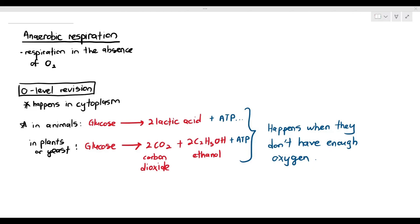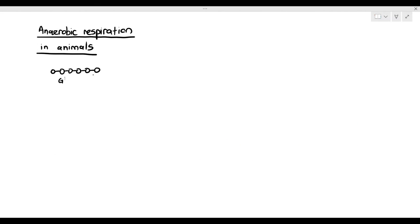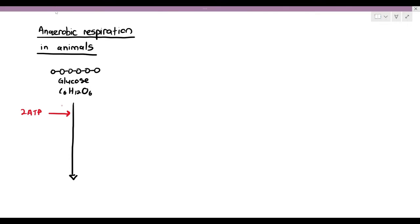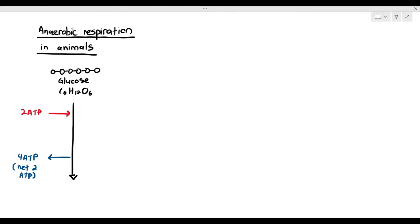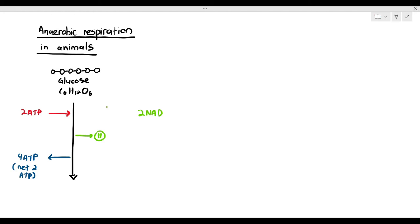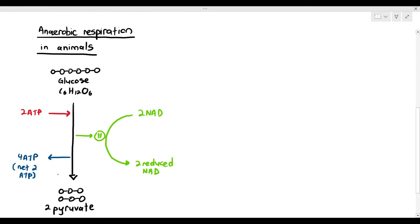We are going to see the process of anaerobic respiration in animals. We always start off with the glucose molecule first, and it will undergo a process known as glycolysis. In glycolysis, you have to spend two ATP molecules to make the glucose more reactive, and it becomes fructose-1,6-bisphosphate. In the end, it produces two reduced NADs and four ATP molecules, and the end products are two pyruvate molecules.